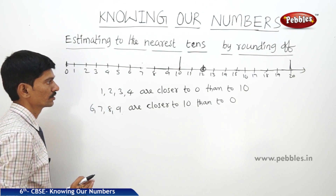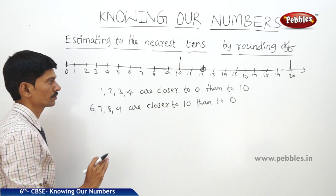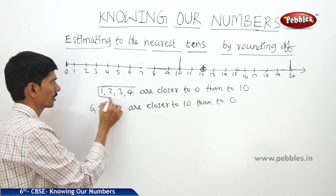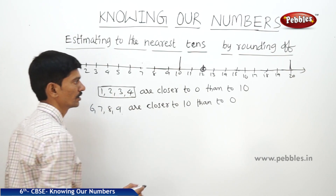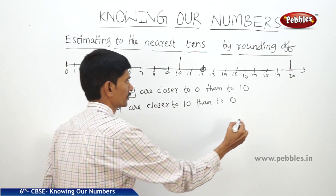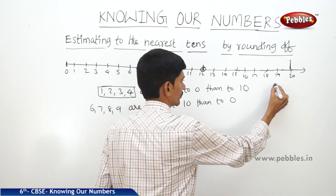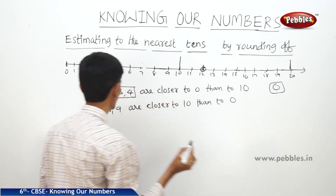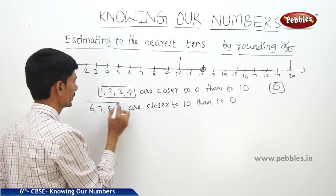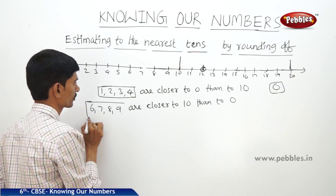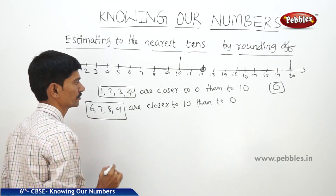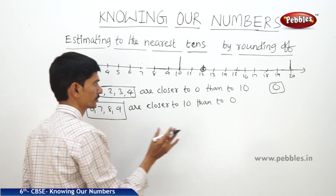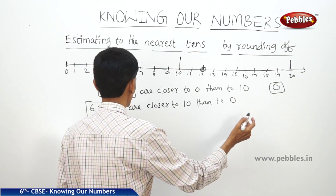The numbers 1, 2, 3, 4 are closer to 0 than to 10, so then these numbers are rounded off to 0. And the numbers 6, 7, 8, 9 are closer to 10 than to 0, so then these numbers are rounded off to 10.